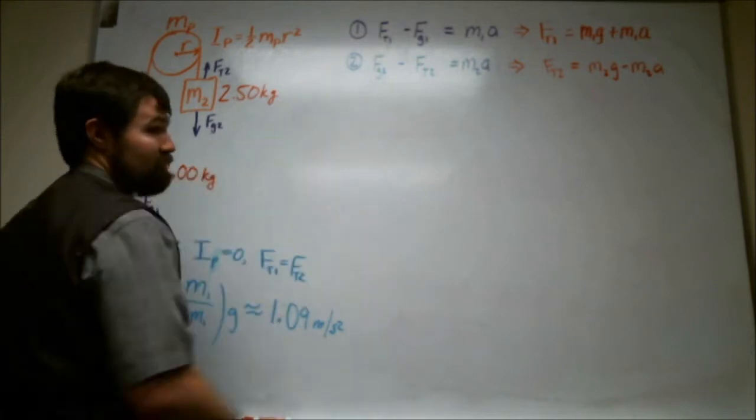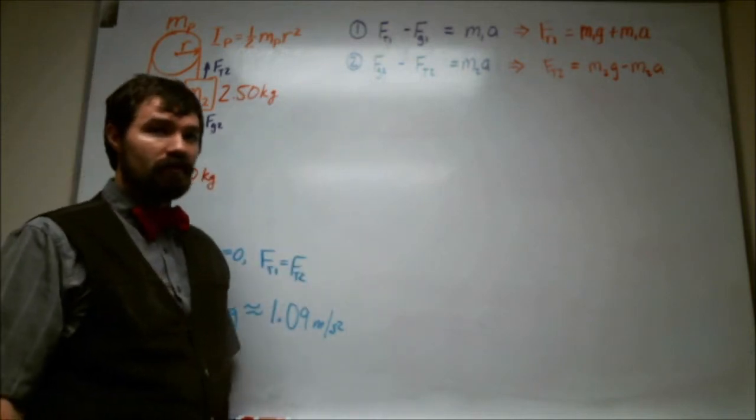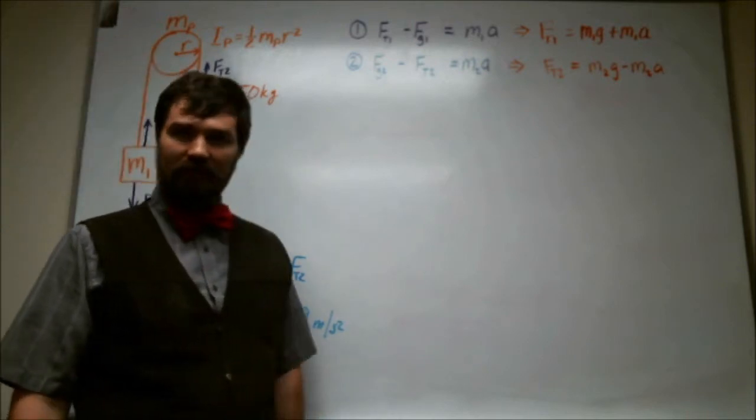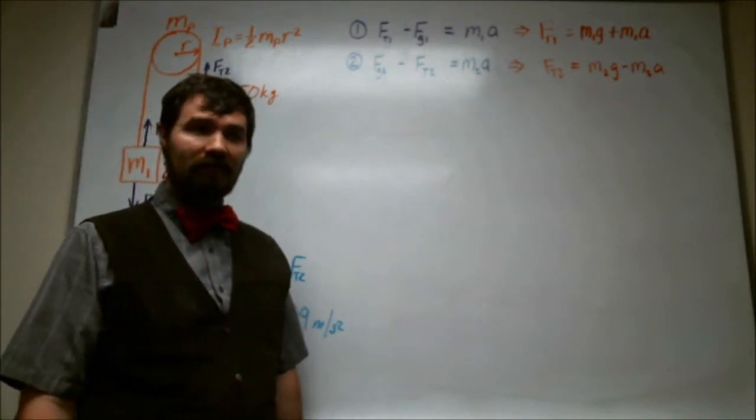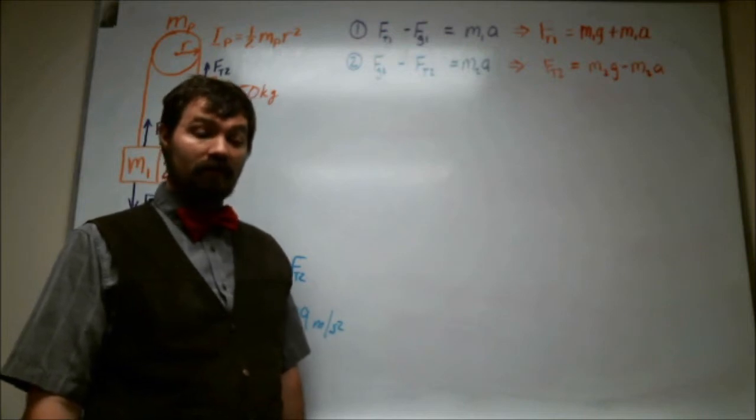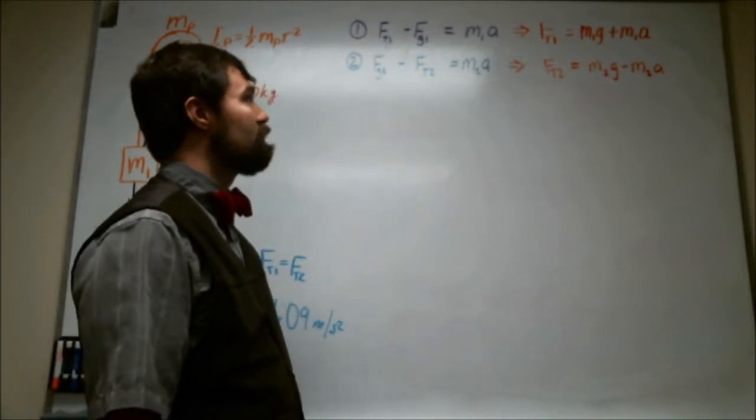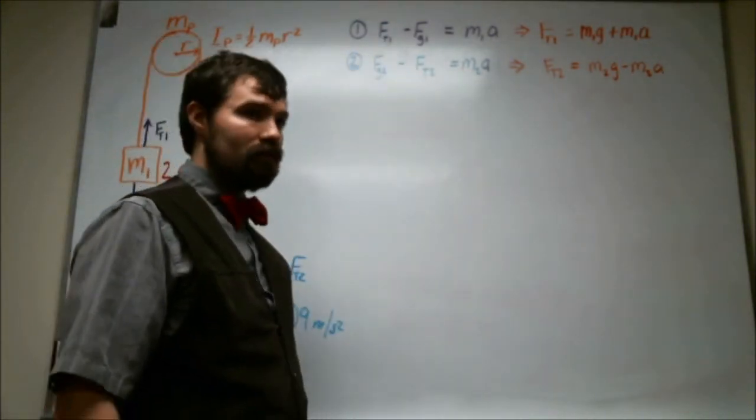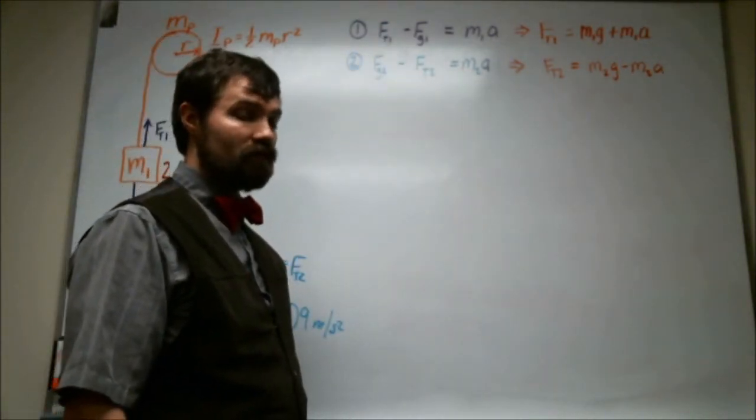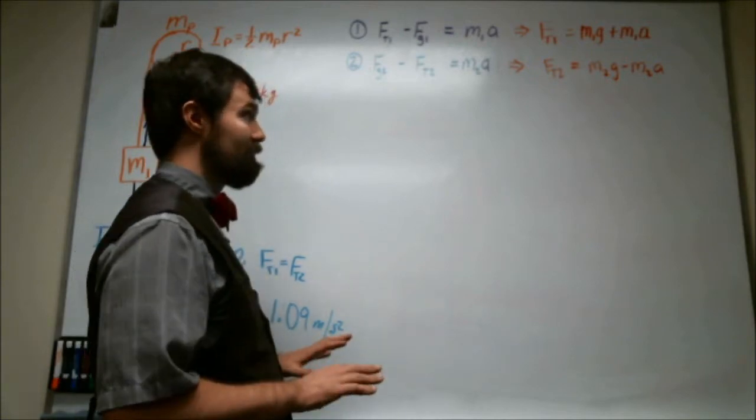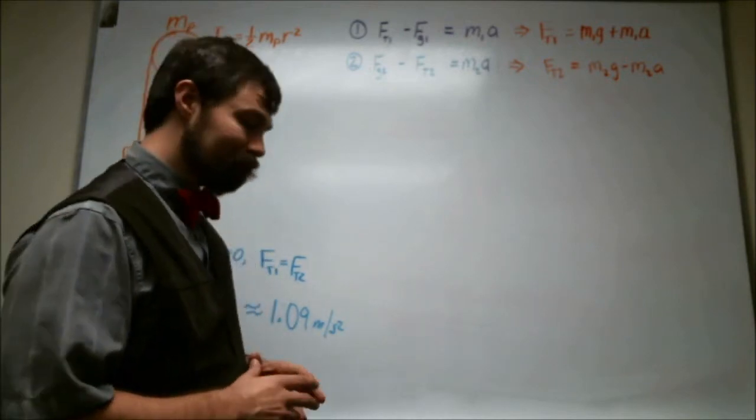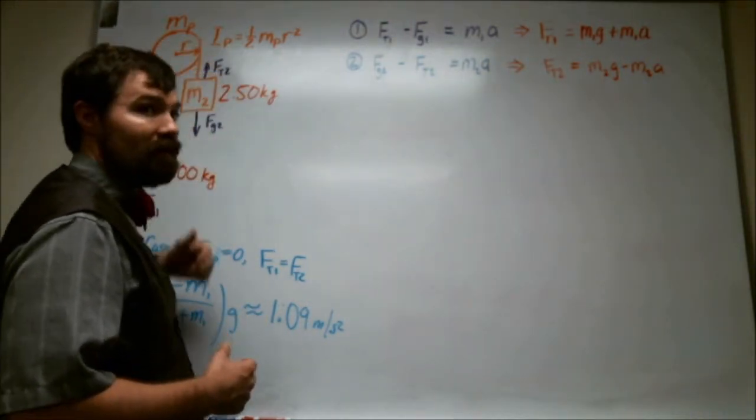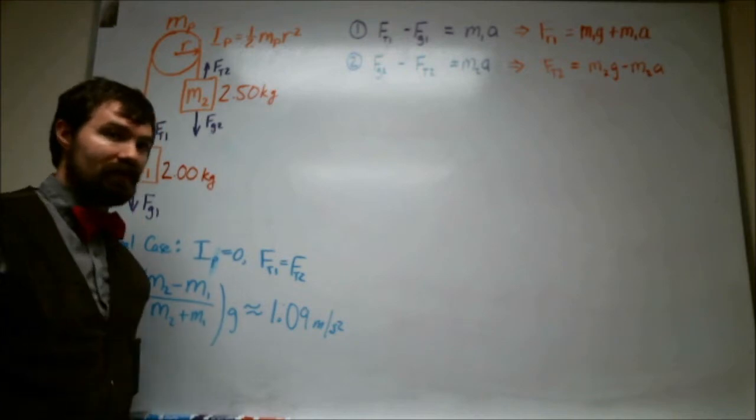actually the same two equations still apply to mass two and mass one. But in the standard treatment of this physical pulley system, we no longer can use the idea that the two tensions are equal. So we'll leave them as not being equal. But other than that, each mass has a tension and a weight pulling in opposite directions upon it.